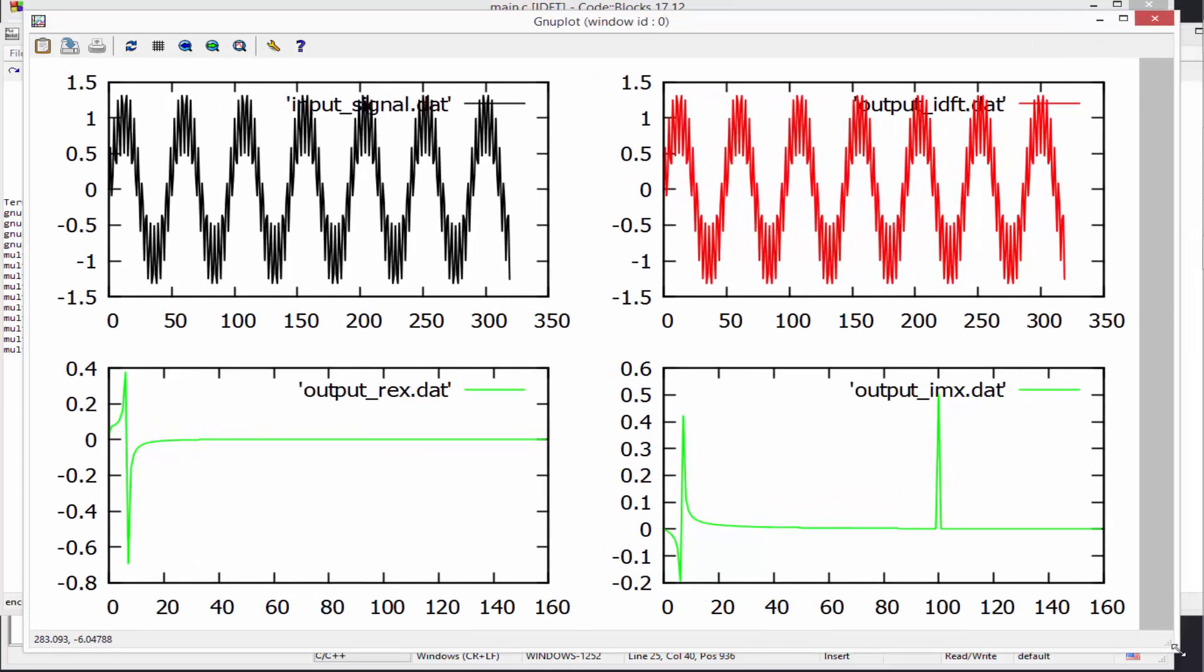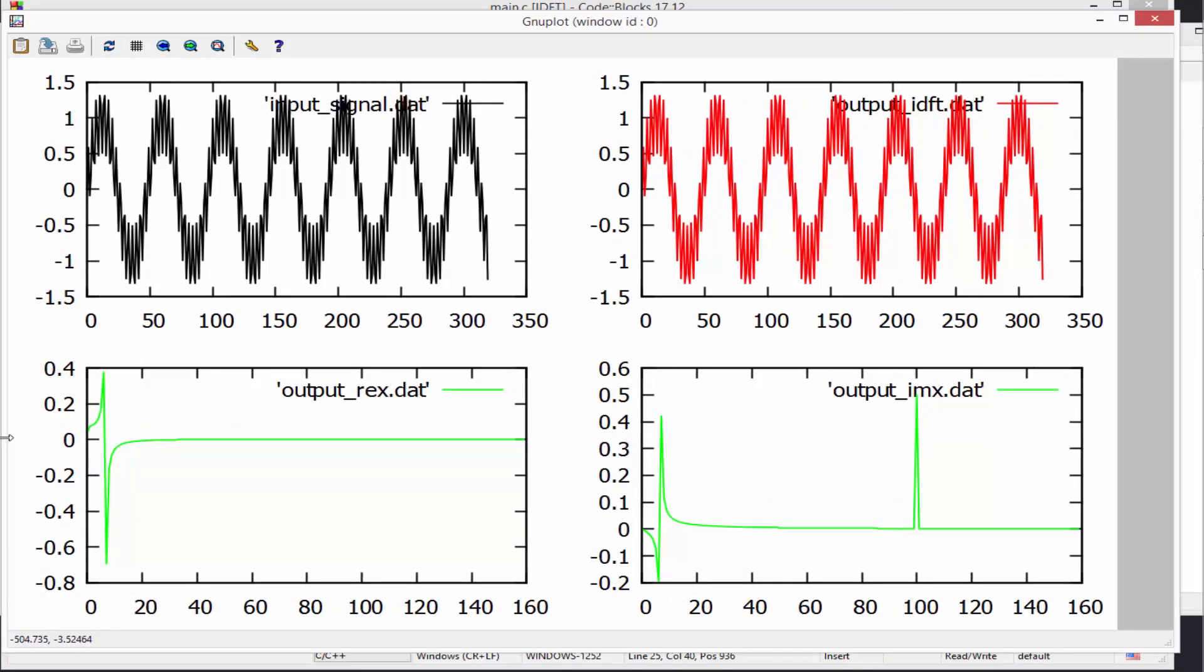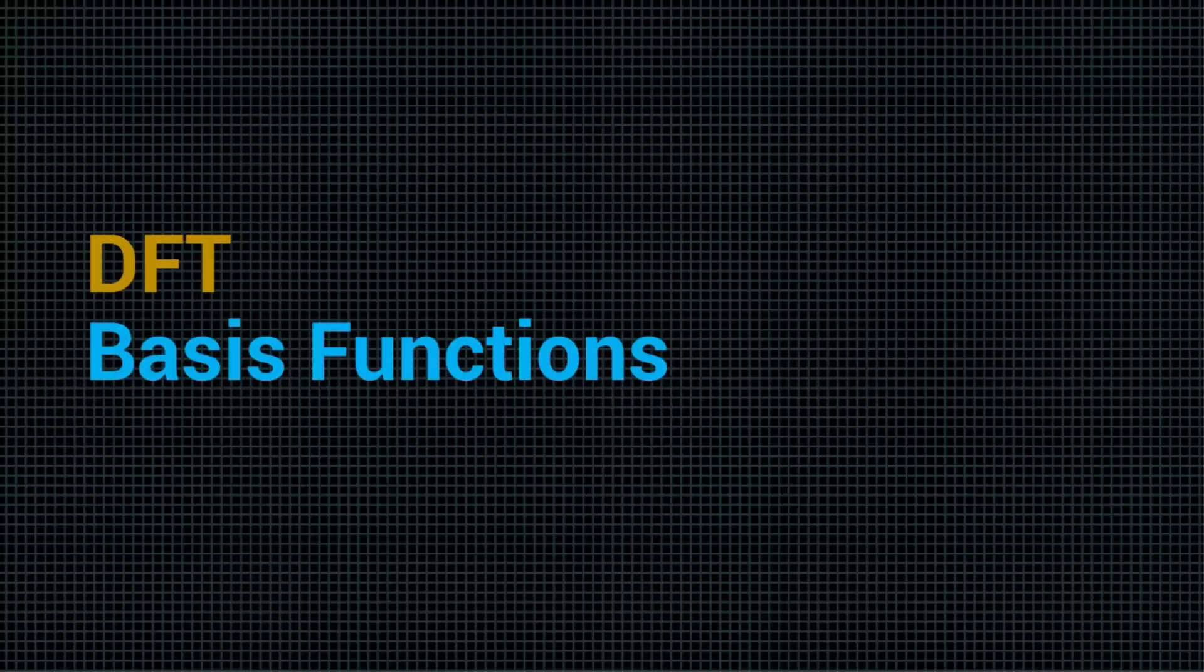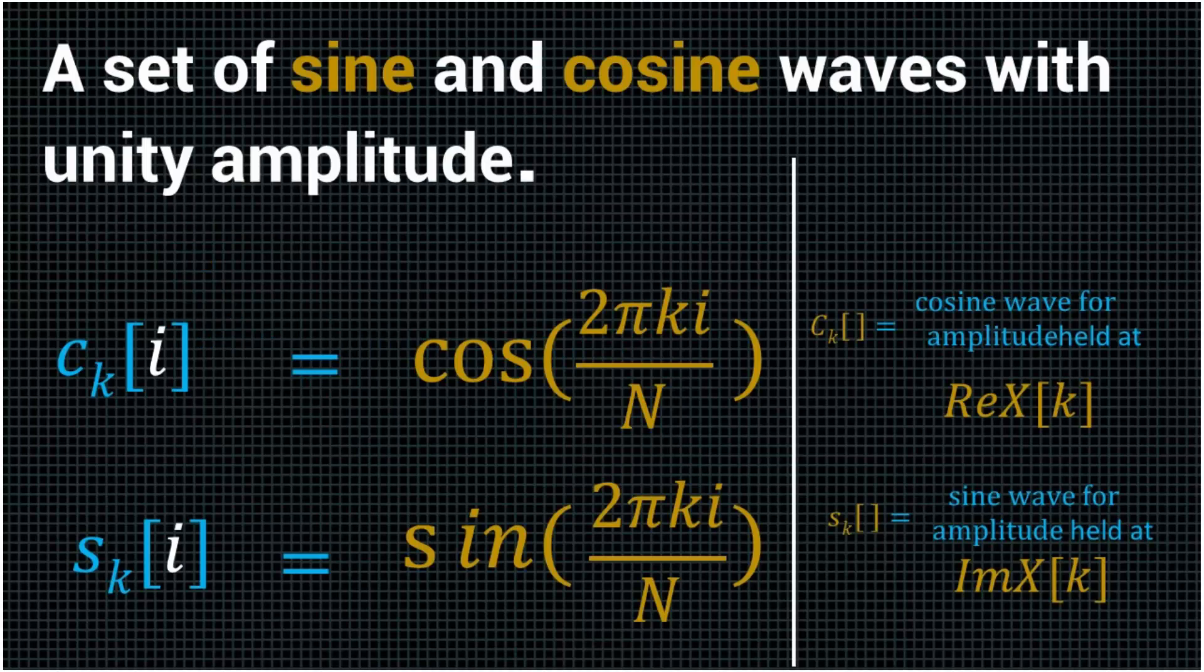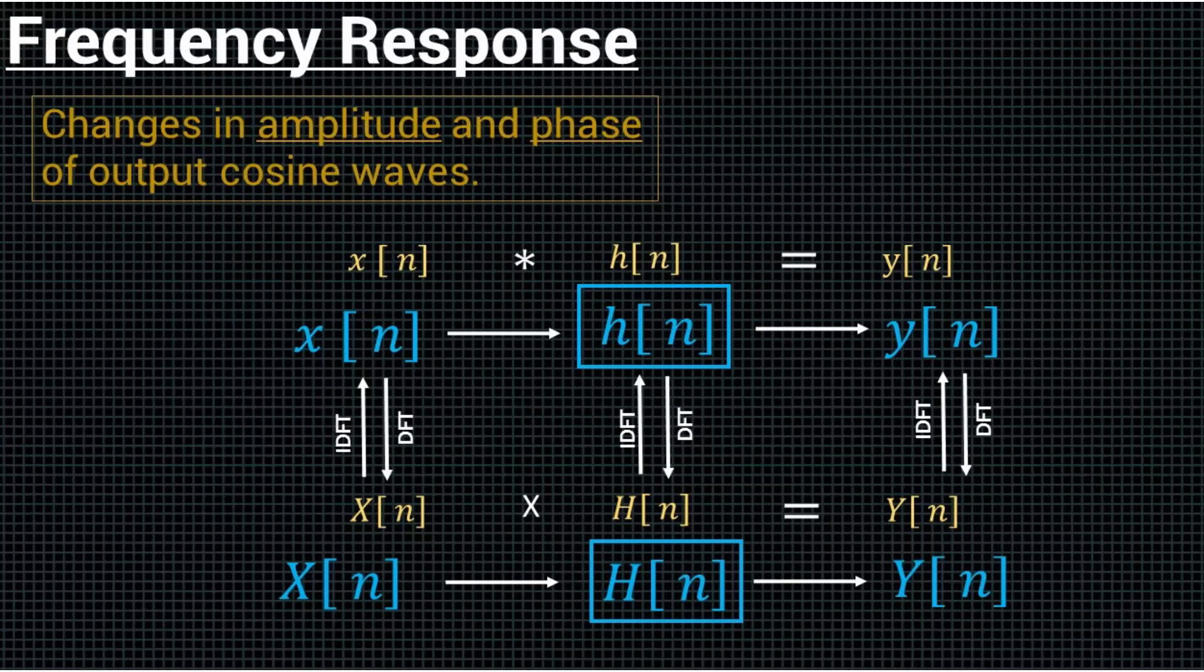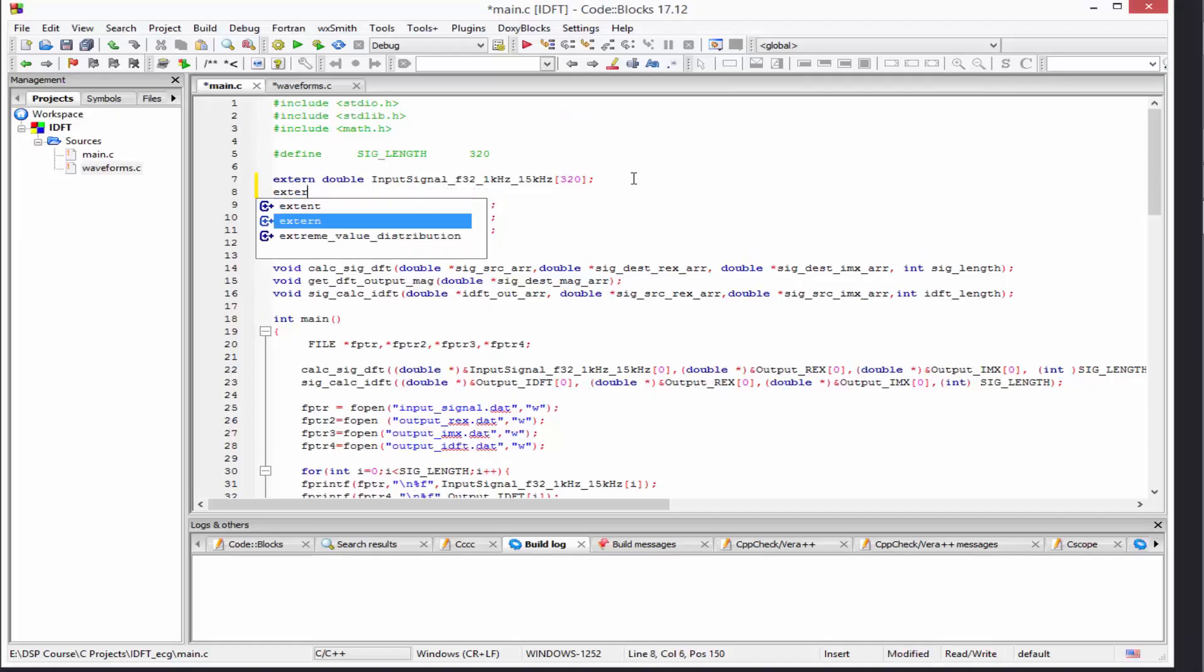By the end of this course, you should be able to develop the convolution kernel algorithm in C, develop the discrete Fourier transform algorithm in C, and develop the inverse discrete Fourier transform algorithm in C.